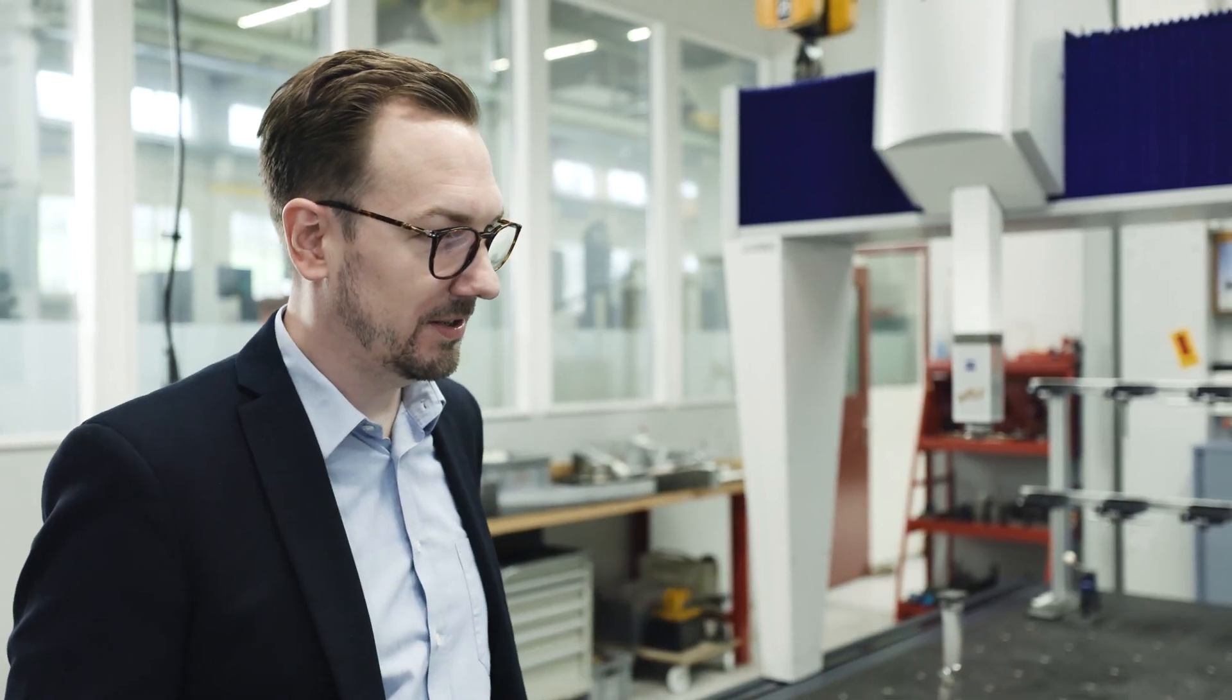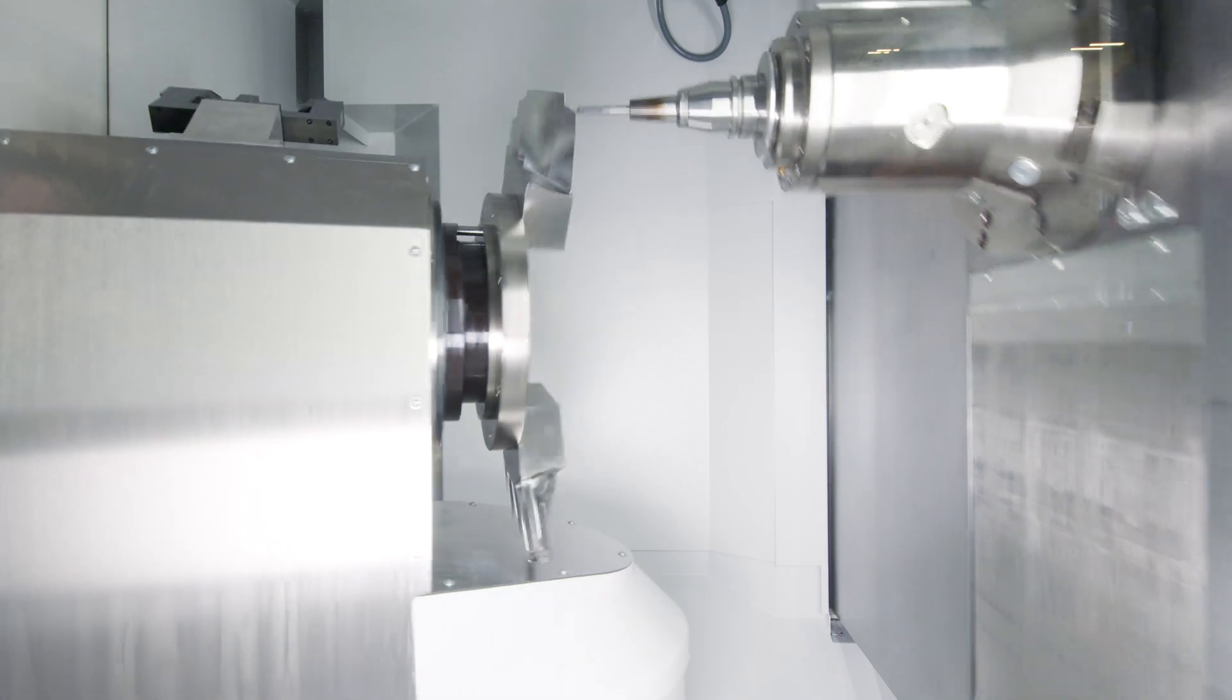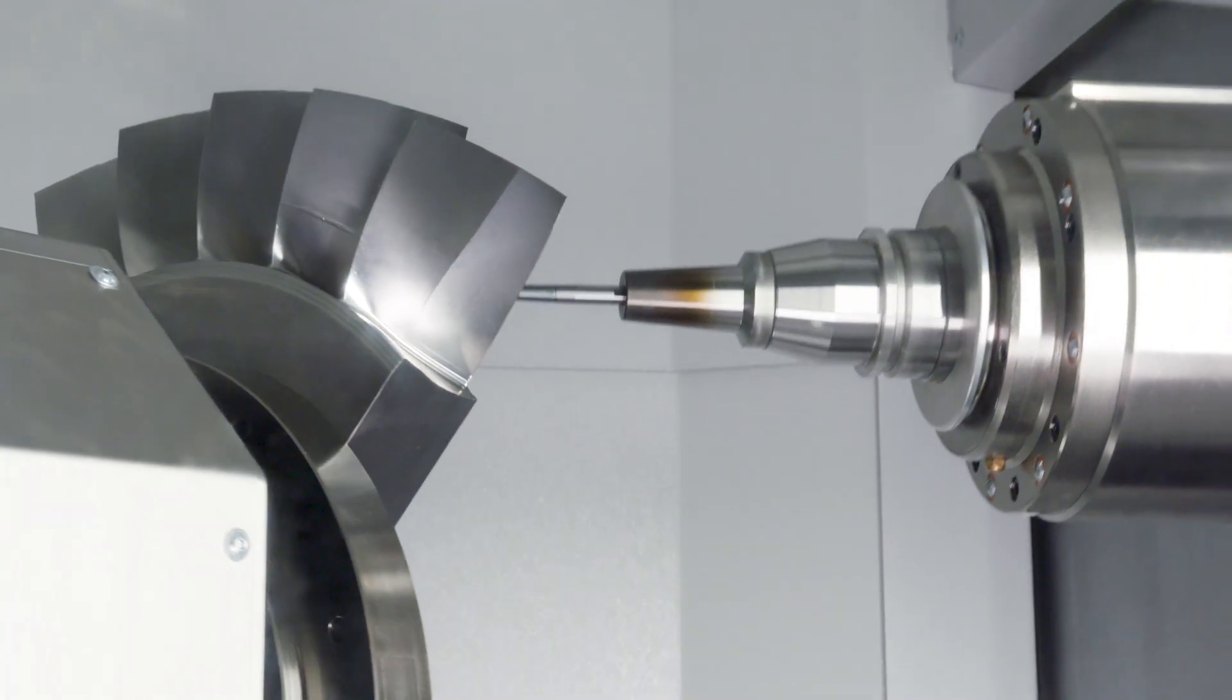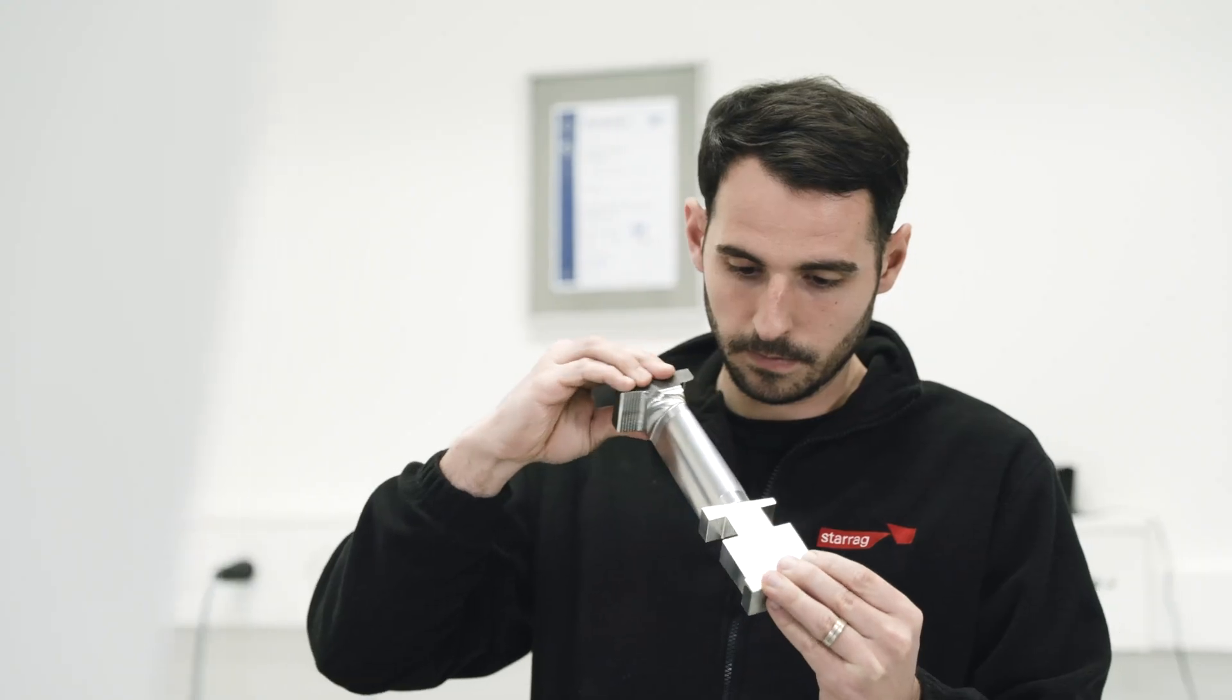The quality requirements for turbine blades are very high. Measurements account for 20% of total production costs and around 25% of production time. That's a lot. So a quarter of the entire production time and a fifth of production cost go towards measuring the parts.